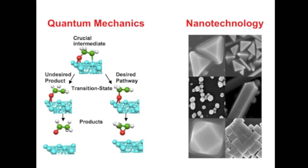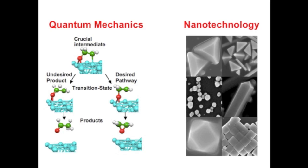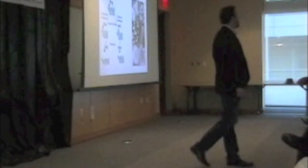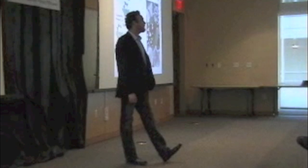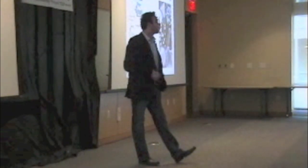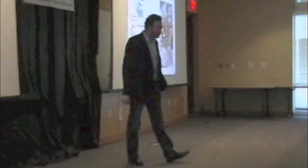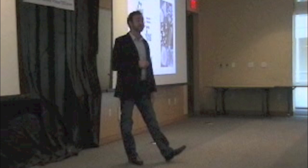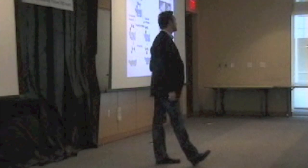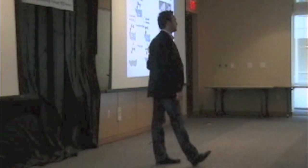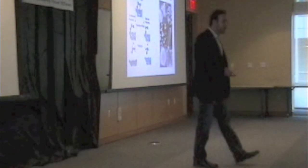We do this by using some key technologies: quantum mechanics and nanotechnology. We use quantum mechanics and the amazing power of computers to map out how these molecules change on a catalyst surface. We also have nanotechnology, where we can engineer the structure and function of different materials at very, very small scales. These catalyst particles are each about a thousand times smaller than the width of your hair. We engineer their surface properties so they interact with molecules the way we want and form the products we want, and we can actually view and understand these things fairly well nowadays.